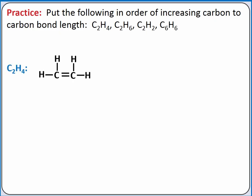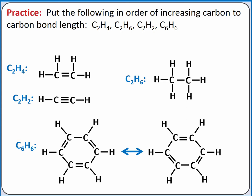C2H4 has a double bond between the two carbon atoms. C2H6 has a single bond between the two carbon atoms. C2H2 has a triple bond between our two carbon atoms. And C6H6 is benzene, which exists as a pair of resonant structures with alternating single and double carbon-to-carbon bonds.